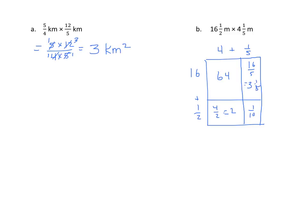Now I'll find the sum of my partial products. I have 64 plus 3 and 1 fifth, plus 2, plus 1 tenth. We'll now add the whole number portion. 64 plus 3 plus 2 is 69, plus 1 fifth, plus 1 tenth. And 1 fifth is easily converted to tenths, because 5 times 2 is 10. So it's 69 plus 2 tenths plus 1 tenth equals 69 and 3 tenths.